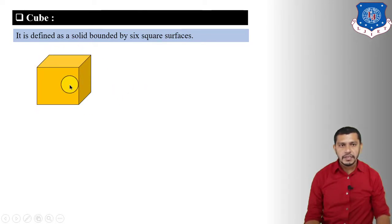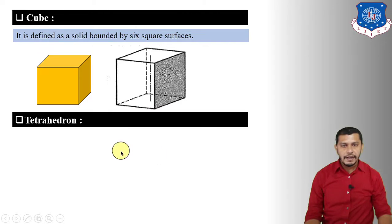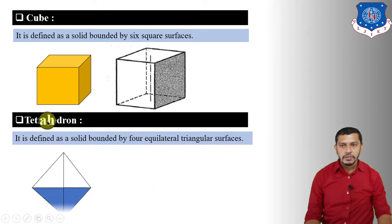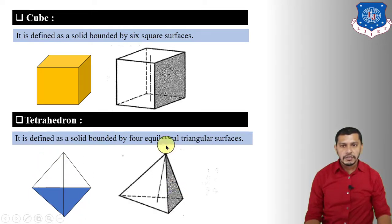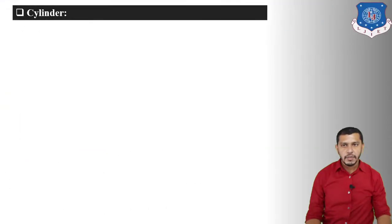A cube is defined as a solid bounded by six square surfaces. A tetrahedron is defined as a solid bounded by four equilateral triangular surfaces, as seen in the figure where all four faces are equilateral triangles.